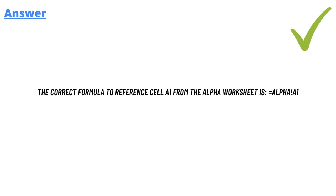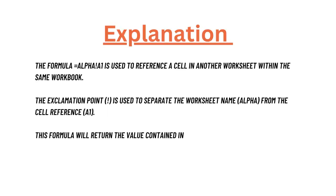The correct answer to the question — the correct formula to reference cell A1 from the alpha worksheet — is alpha!A1, which is option D. This is the option D which is correct.